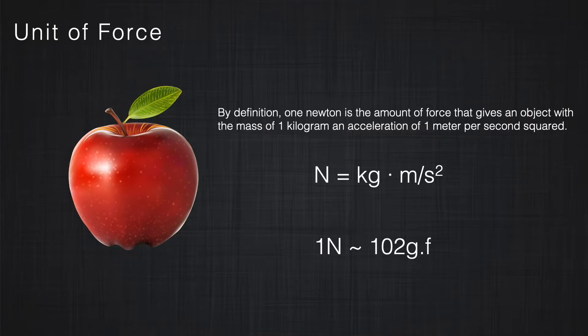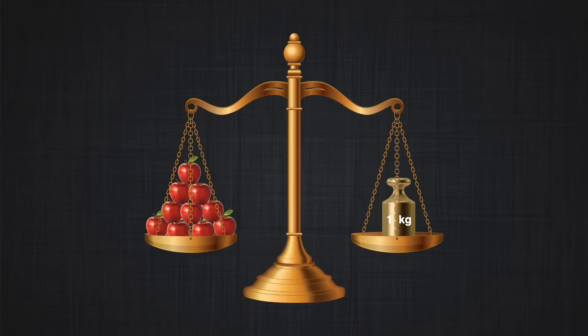In orthodontics, we use two units to define force: either newtons or gram force. One newton is almost the weight of an apple — about 100 to 102 gram force. Therefore, 10 newtons is equal to one kilogram force. In orthodontics, because we usually use lighter forces, instead of saying one newton we say 100 centinewtons. So we divide it into a hundred parts, and we usually work around 25, 50, or 100 centinewtons.